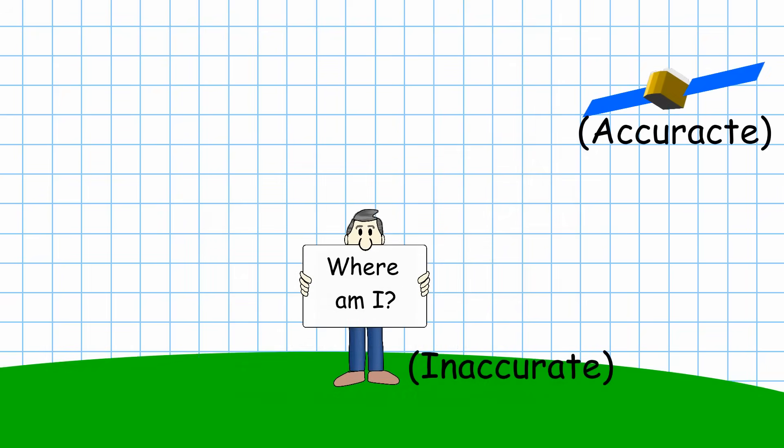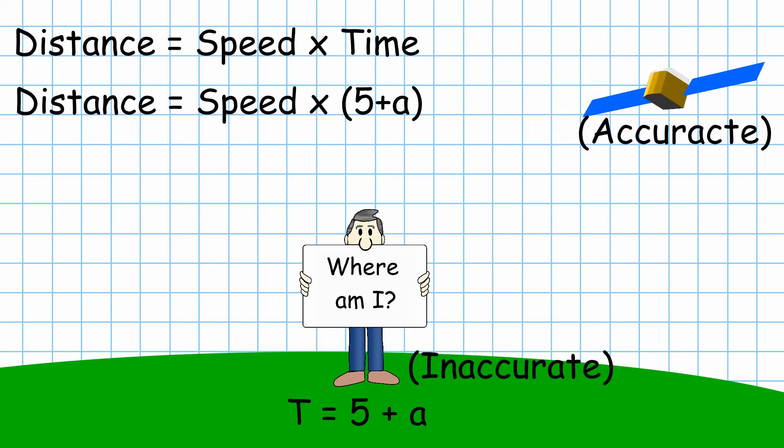In our previous example, instead of the receiver knowing that the time equals 5, it would now think that the time equals 5 plus some offset, which we're just going to call alpha for now. The equations that we use to calculate the distance of the satellites now becomes distance equals speed times time, which equals speed times 5 plus alpha. This offset is going to be the same for all equations, as the time offset is constant. The receiver's clock is wrong by a set amount, we just don't know what that amount is.